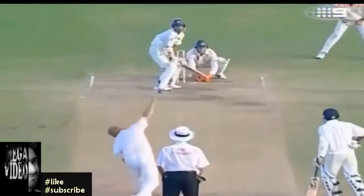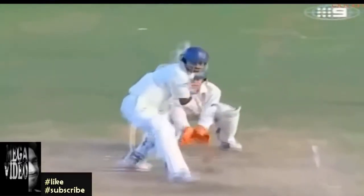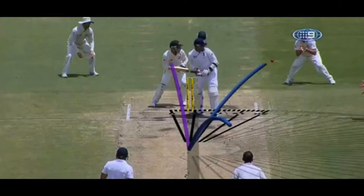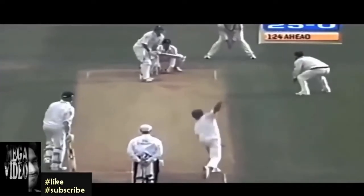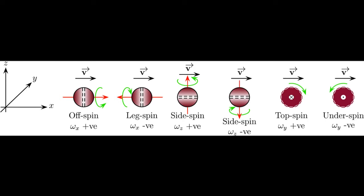Physics controls two aspects of spin bowling. Number one being friction, as when the ball comes in contact with the pitch, it experiences resistance which affects the motion of the ball. And secondly, rotation, which is the action of rotating around an axis or center. This is represented by the rotation the bowler generates on the ball by dragging his fingers down the seam. When both friction and rotation come together in spin bowling, they generate turn.